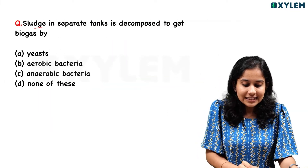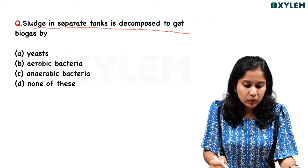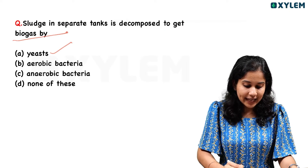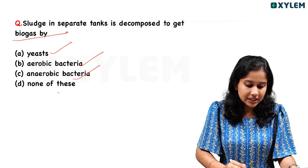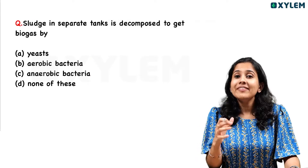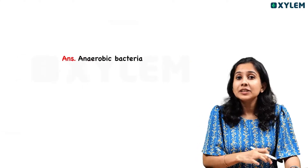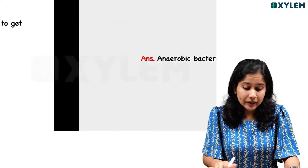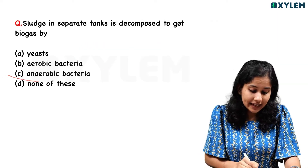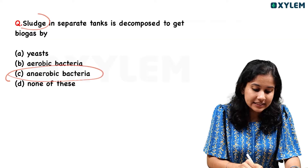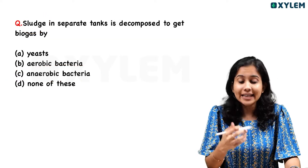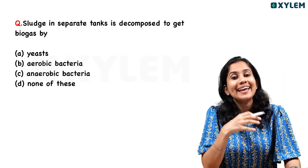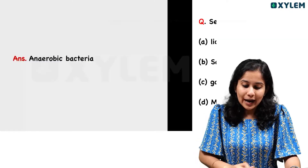Next question: sludge in separate tanks is decomposed to get biogas by — yeast, aerobic bacteria, anaerobic bacteria, or none of these? The answer is anaerobic bacteria. Anaerobic bacteria act on the sludge and decompose it to produce biogas.